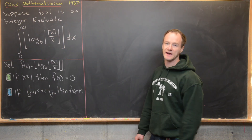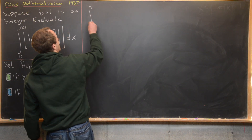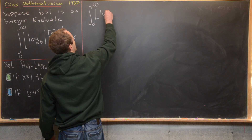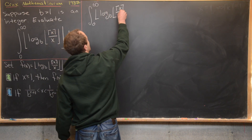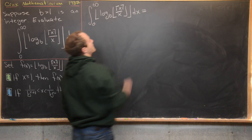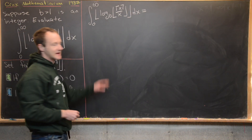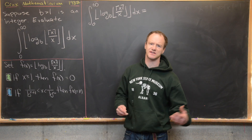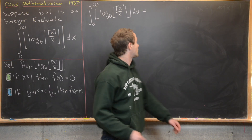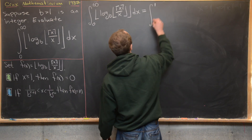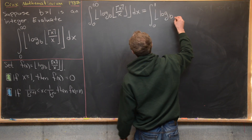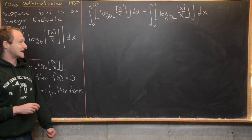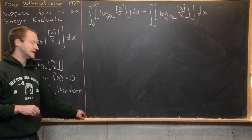Now that we have these two facts, we're ready to finish. Our goal integral is the integral from zero to infinity of the floor of the log base b of the floor of the ceiling of x over x dx. Using the first fact, since the function equals zero for x greater than or equal to one, we can change the upper limit from infinity to one. So this becomes the integral from zero to one of the floor of the log base b of the floor of the ceiling of x over x dx.